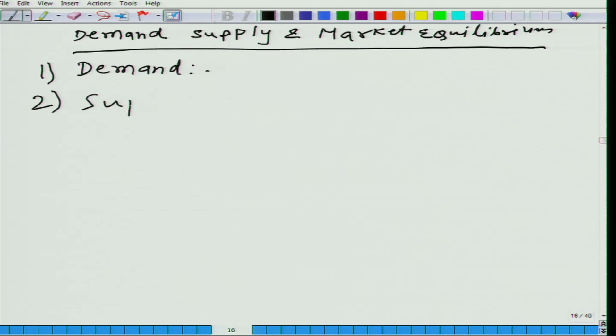Similarly, we are going to learn about supply. How many units of a good a particular seller is willing to sell at a particular price? And when we take all such price and quantity combinations, we get a supply curve. After learning about demand and supply, we are going to learn about market equilibrium.